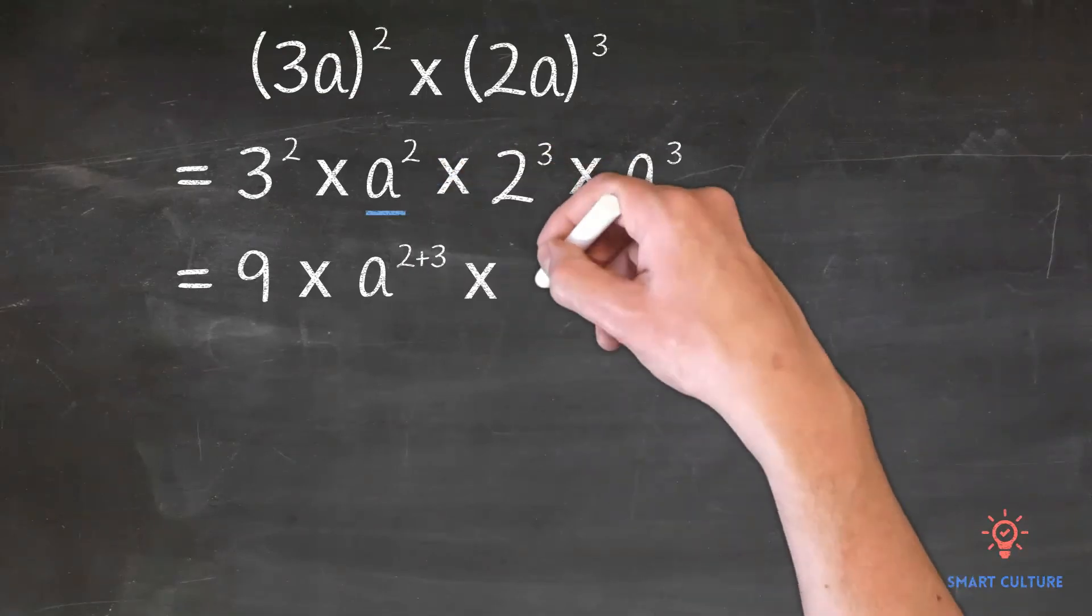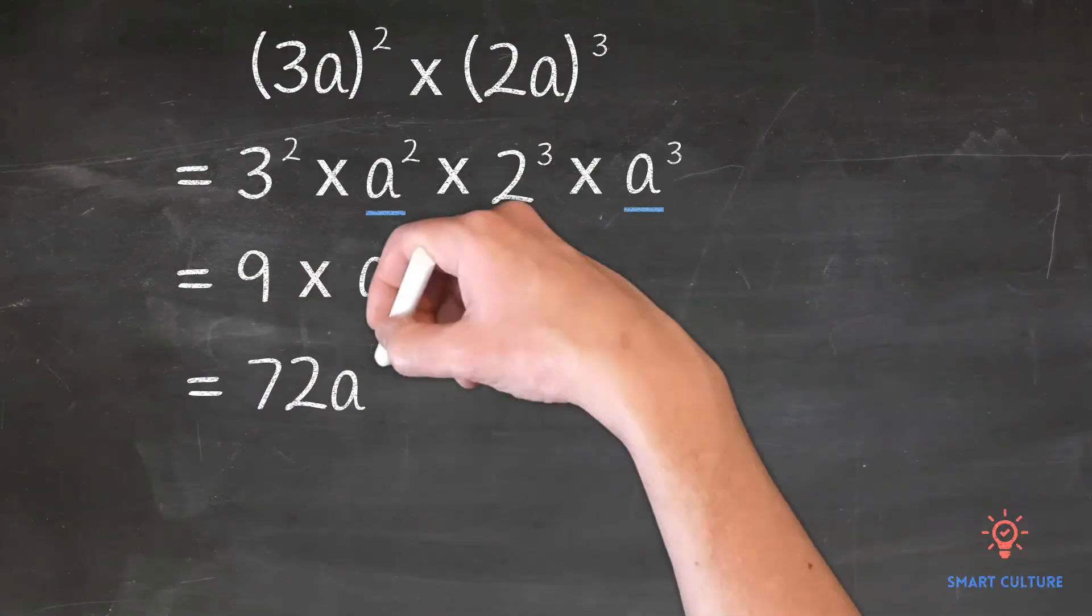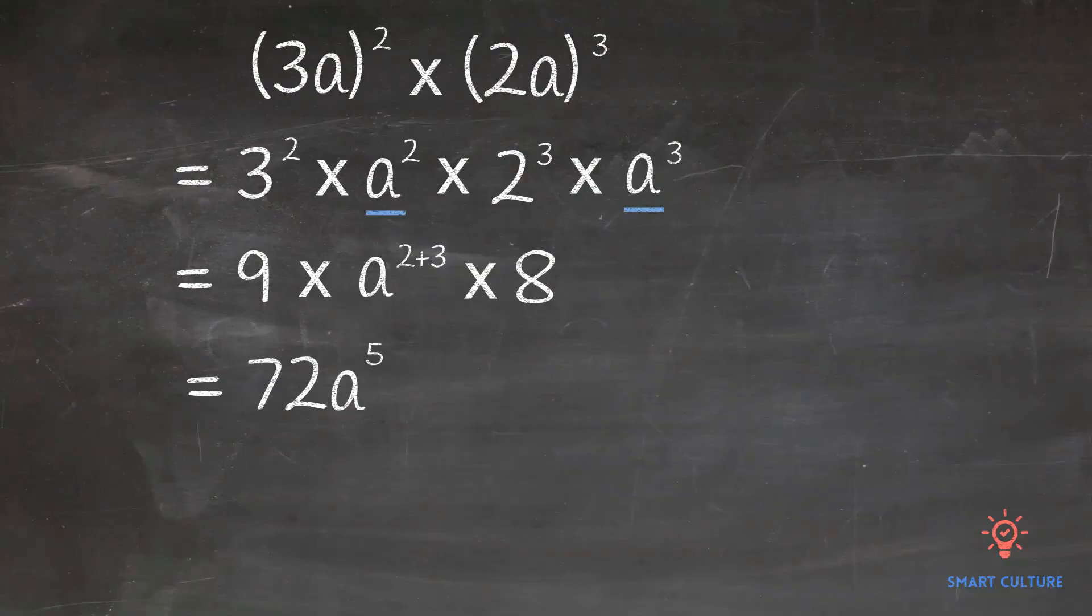2 cubed is equal to 8. Now we have to multiply 9 and 8. That equals 72. 2 plus 3 equals 5. So the final answer will be equal to 72a to the power of 5.